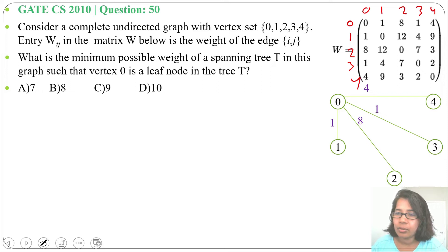Next, from 1 to 0 weight is 1, already done. 1 to 2 weight is 12, 1 to 3 weight is 4, 1 to 4 weight is 9.